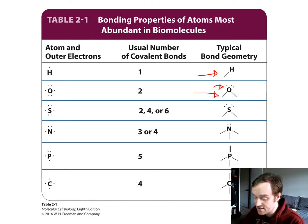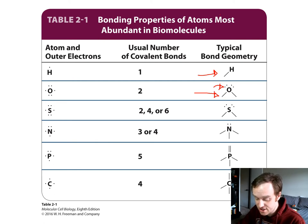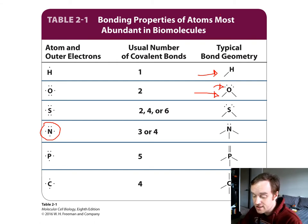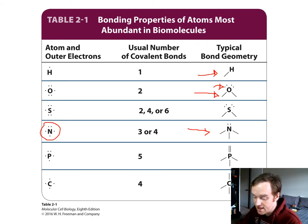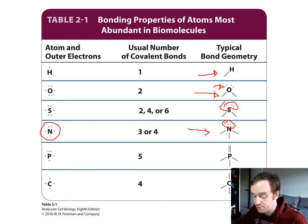Sulfur has up to six electrons to share and forms two covalent bonds in hydrogen sulfide, but can accommodate six covalent bonds as in sulfuric acid and its sulfate derivatives. Nitrogen has five electrons to share, and in ammonia the nitrogen atom forms three covalent bonds. The pair of electrons not involved in covalent bonds can take part in non-covalent interactions. Generally, whenever there are excess electrons, those extra electrons can participate in non-covalent interactions.